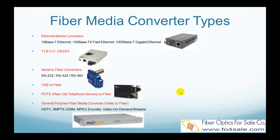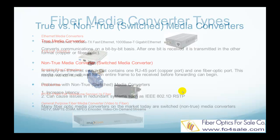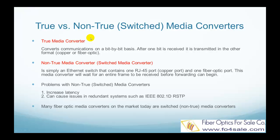In the market, there are two basic types of media converters. A true media converter basically converts communication on a bit-by-bit basis. After one bit is received, it is transmitted in the other format — copper or fiber optic. This is in contrast to a switch, which receives the entire Ethernet frame before forwarding can begin.